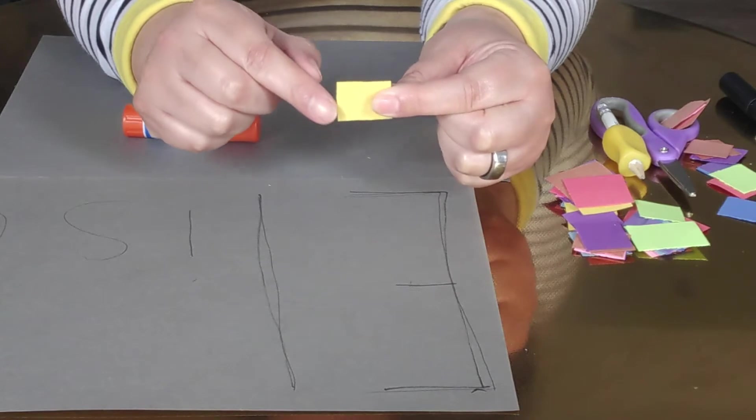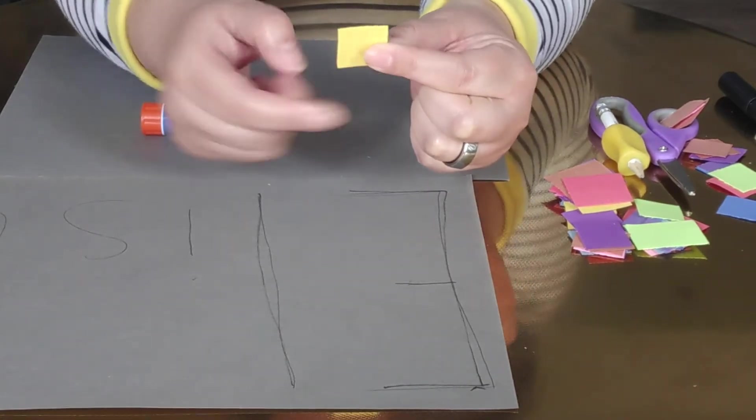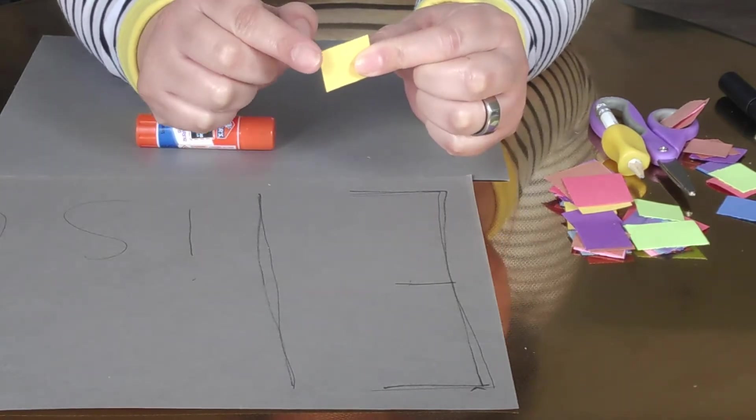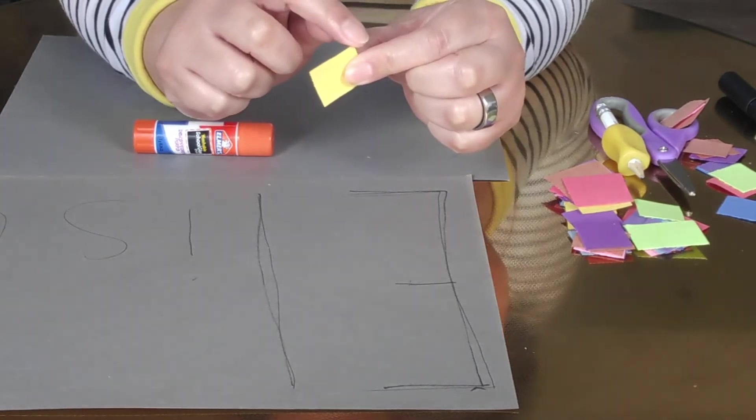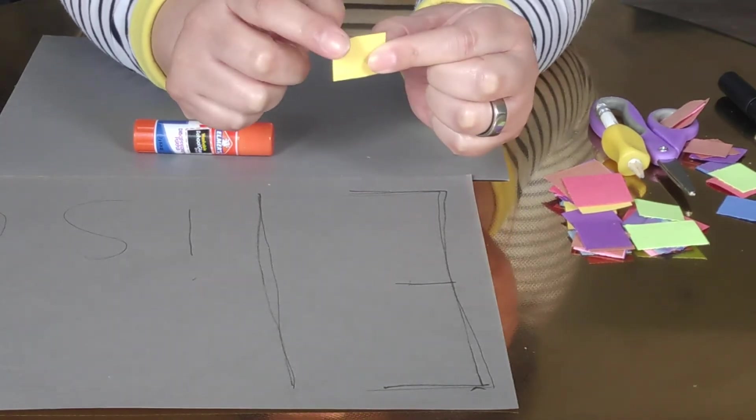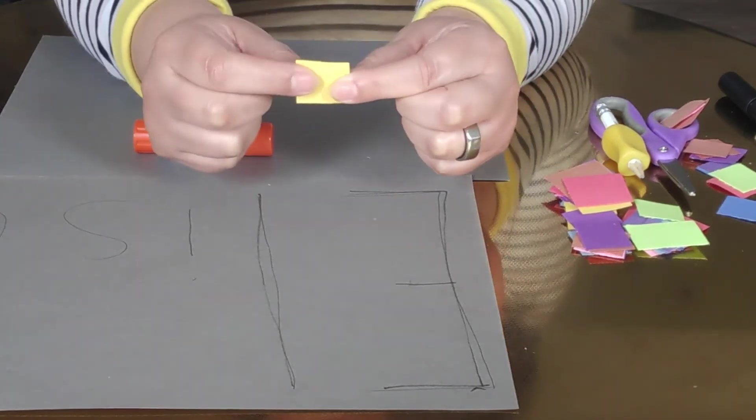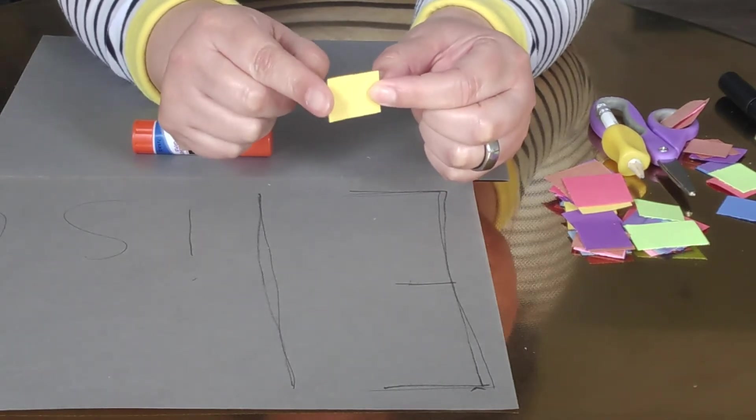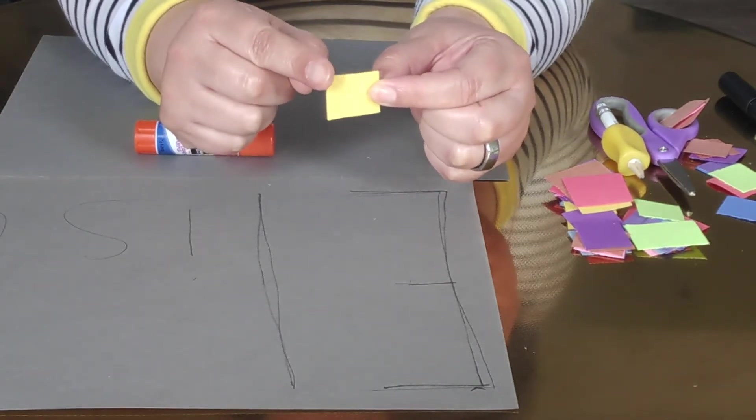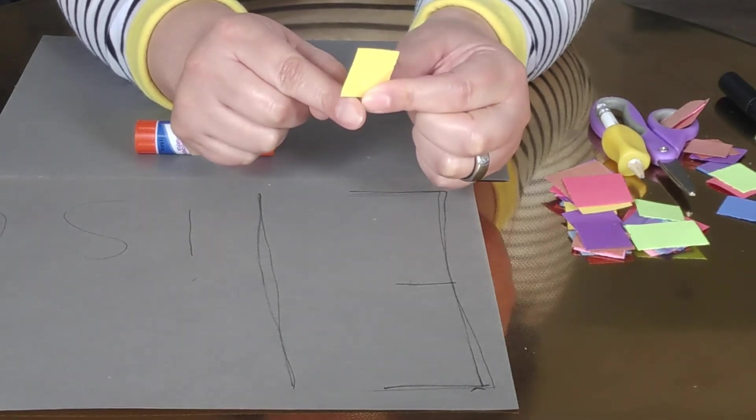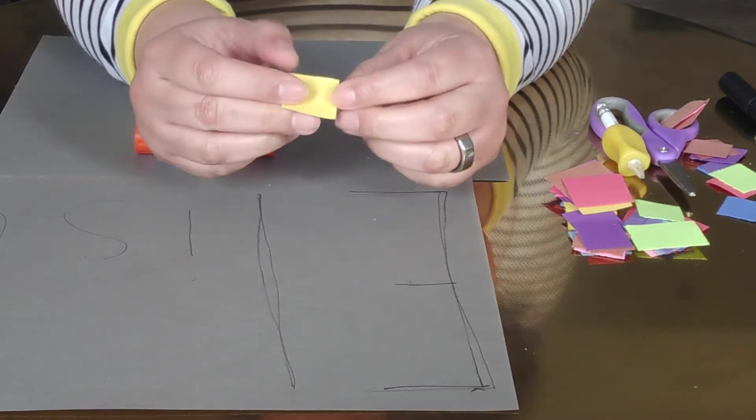One, two, three, four. Four sides. And have them feel the corners. There's one corner, two corner, three corner, four. Four corners. And you can also get objects that are squares and have them feel the sides and the corners so that they understand the concept of a square, how it's drawn, how it's cut out, and how it's used.